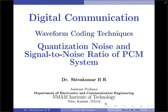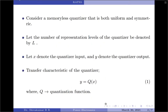To derive an expression for the signal to noise ratio of the PCM system, let us start by considering a memoryless quantizer that is both uniform and symmetric in nature. Let the number of representation levels be denoted by capital L. Let small x denote the quantizer input and y denote the quantizer output. These two variables are related by the transfer characteristics given by equation 1: y equals q of x, where q represents the quantization function that creates a staircase approximation.